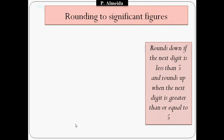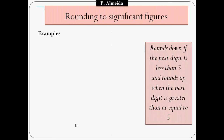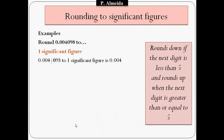Finally, imagine they ask you to round to a certain number of significant figures. The main rounding rule is: round down if the next digit is less than 5, and round up when the next digit is greater than or equal to 5. For example, take 0.004098 and round to one significant figure. The first significant figure is 4, and the digit after is 0, which is less than 5. So rounded to one significant figure it stays as 0.004.